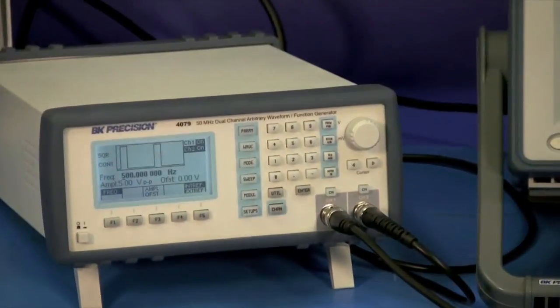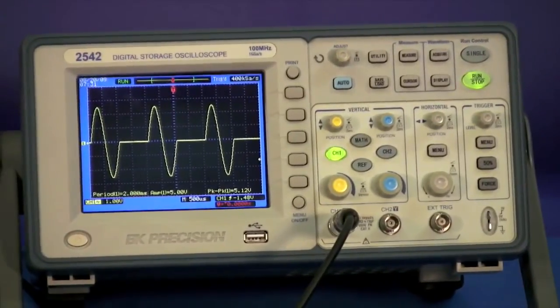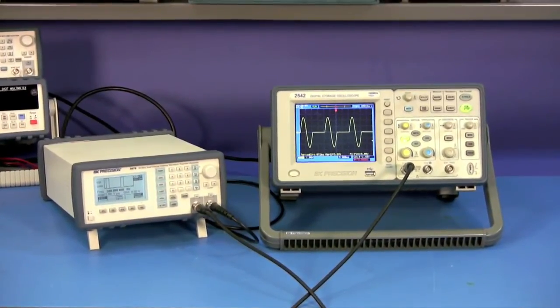Here we have the BK Precision Model 4079 Arbitrary Waveform Generator and the Model 2542 DSO. We will use these two instruments to show how the Model 4079 can be externally triggered.